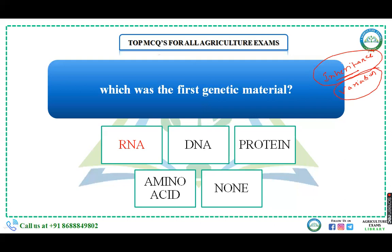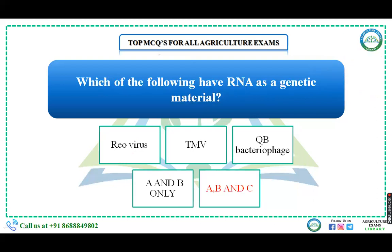Which was the first genetic material — DNA, RNA, protein, or amino acids? The right answer is RNA; DNA evolved from RNA. Which of the following have RNA as genetic material? Options: Reovirus, TMV (tobacco mosaic virus), Qβ bacteriophage. The answer is all three — A, B, and C — because in all three cases, instead of DNA, RNA acts as the genetic material.